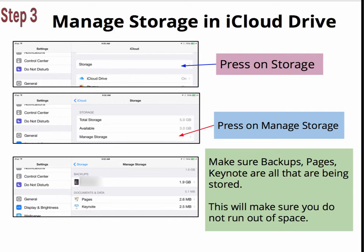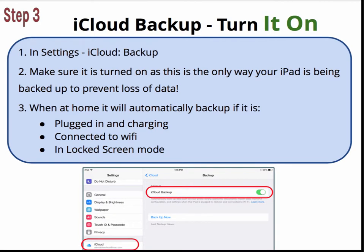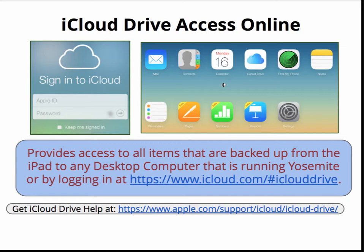Make sure you manage this so you do not run out of space — you have a total of five gigabytes. For iCloud Backup, turn it on. If this is not turned on, go into Settings, iCloud, and Backup, and make sure that the green button is showing so that it is backing up. It will automatically back up when at home if it's plugged in and charging — which you should do at night — connected to Wi-Fi, and in a locked screen mode. You can always check by going into iCloud Backup to see where it says Last Backup. You can access iCloud Drive online by going to iCloud.com/#icloudrive.